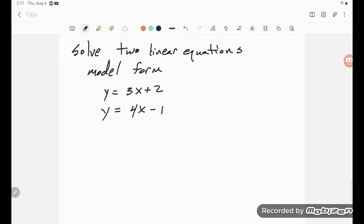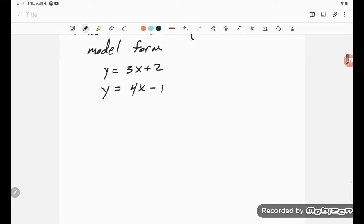So suppose we have these two models, and we would like to know is there a point that satisfies both models, an x and a y value that works in both of these models? Well, what you can do is, if they're in this form, you can think of it as substitution.